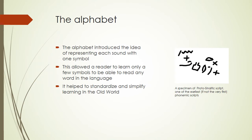And then of course came the alphabet. The alphabet introduced the idea of representing each sound with one symbol, allowing the reader to learn only a few symbols to be able to read any word in the language. We can see here a specimen of the Protosinaitic script — one of the earliest, if not the very first, phonemic scripts. This helped to standardize and simplify learning in the old world.